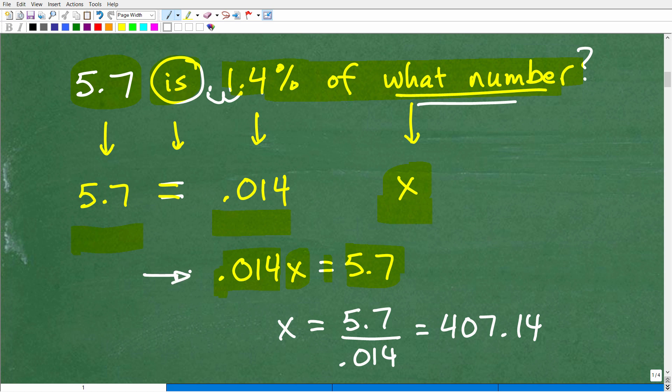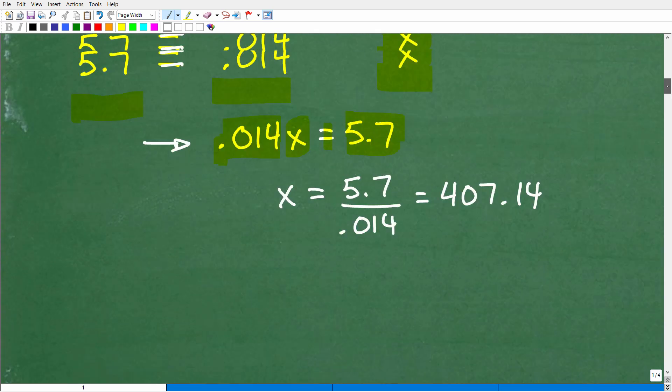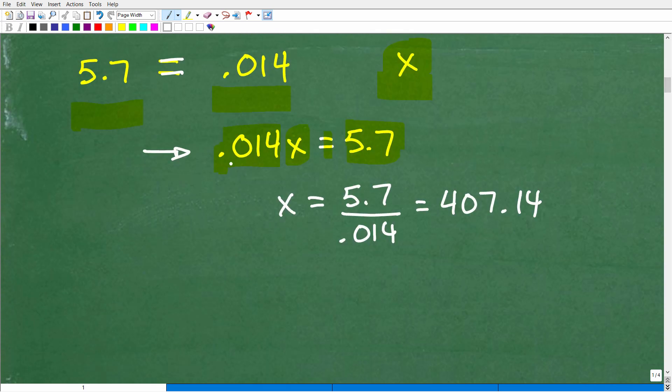At this stage of the game, it's important that you know basic algebra and how to solve basic algebra equations. So let's go ahead and solve this now. I have 0.014x is equal to 5.7. To solve for x, I'm simply going to divide both sides of the equation by 0.014. So you can see that's what I have right here. x will be equal to 5.7 divided by 0.014. Use your calculator, and you should get this answer: 407.14.